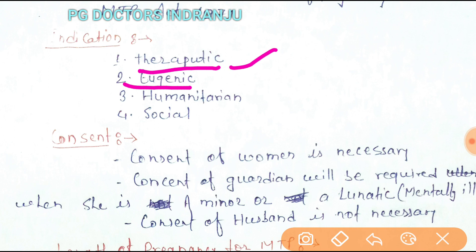Humanitarian indication applies when a pregnant female has been raped and there is a requirement for medical termination of pregnancy. Social indication applies when there is failure of a contraceptive method or barrier method in a married couple, causing serious injury to her mental health, or when the economic environment — actual or reasonably expected — can cause injury to the mother's health.